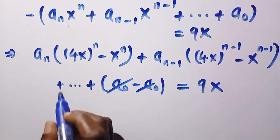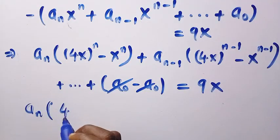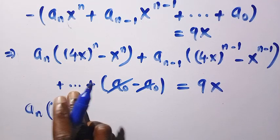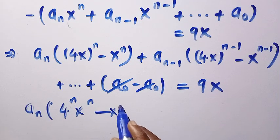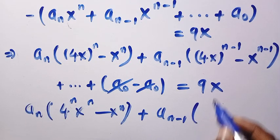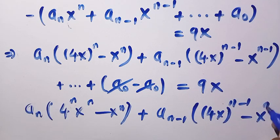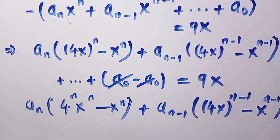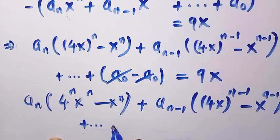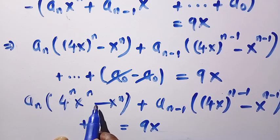Looking at this, we can take out xⁿ as a factor. Here we get 4 raised to the power of n, and xⁿ minus xⁿ simplifies. Then plus aₙ₋₁ times [(4x)ⁿ⁻¹ minus xⁿ⁻¹], and so on, all equals 9x. We factor out xⁿ to get (4ⁿ minus 1), everything equals 9x.